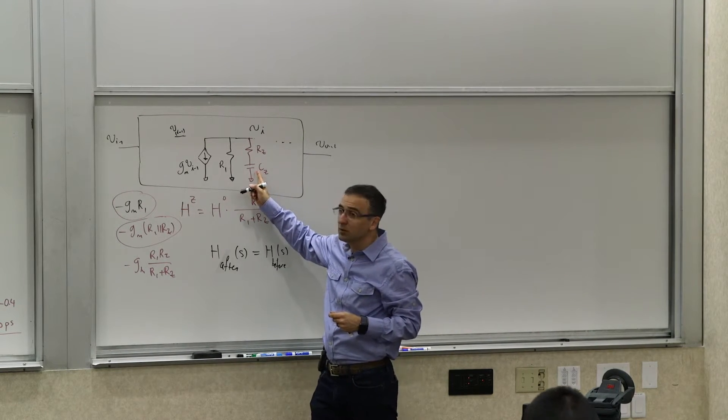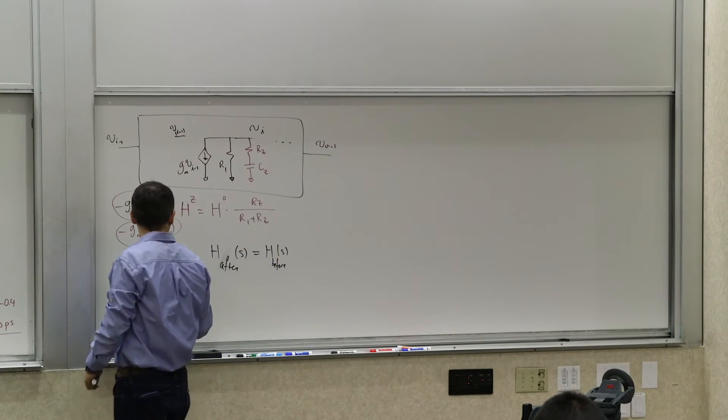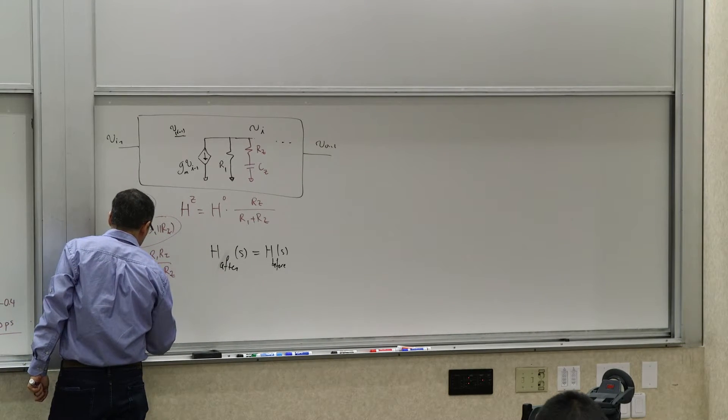Do we have a new pole when we do this? Yes, right? So, what is the time constant for that pole? What is the tau_z?